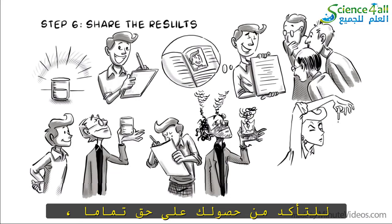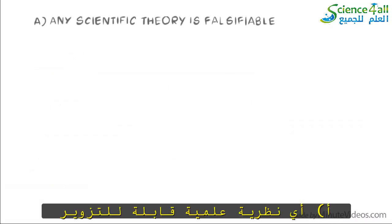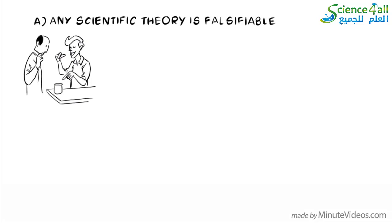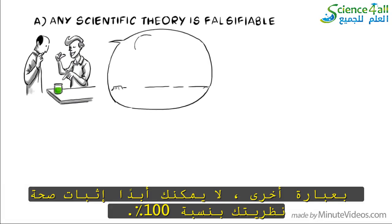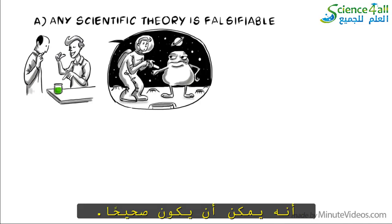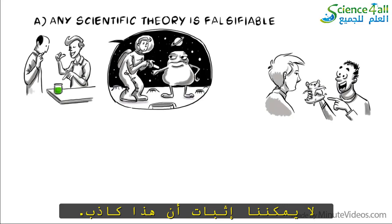To make sure you get it completely right, here are three more things you can check before you publish. A: Any scientific theory is falsifiable. Real scientists know that there is no such thing as a scientific proof. In other words, you can never prove your theory to be a hundred percent right. All you can do is find a lot of supporting evidence that it could be correct. Here is one example: say that someone says hamsters can fly. We cannot prove that this is false.